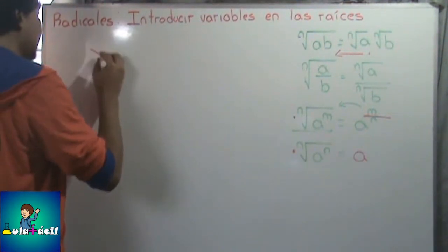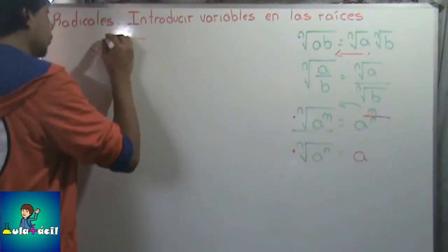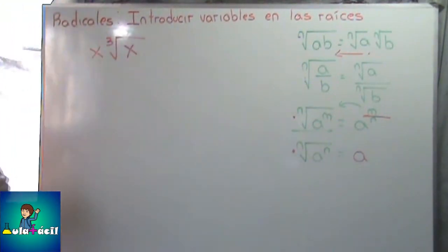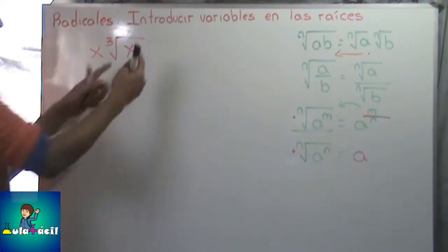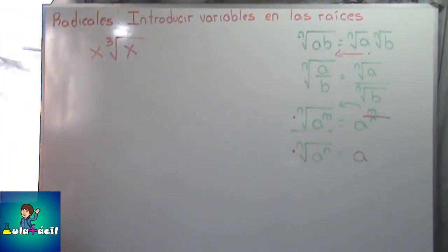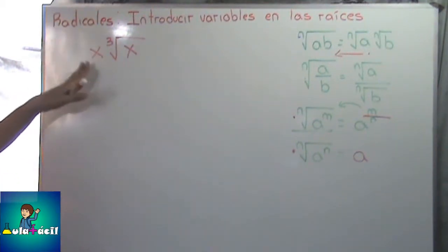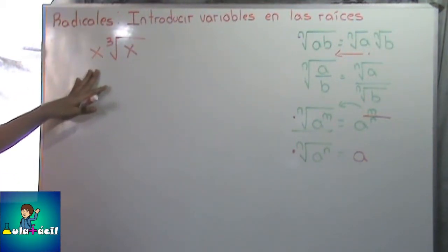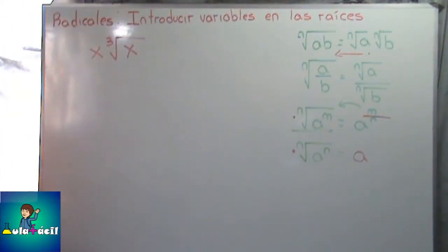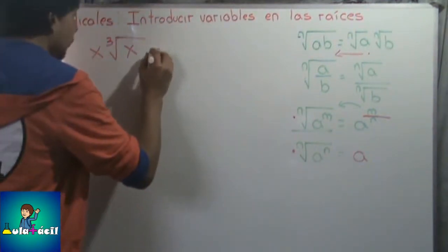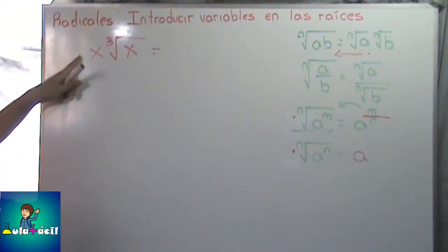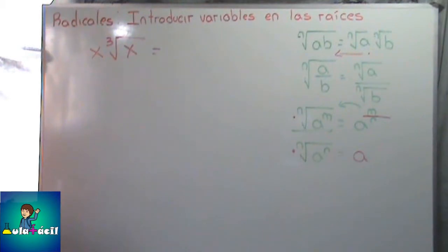Volviendo a nuestro ejercicio, teníamos X por raíz cúbica de X. Esta X va a multiplicar a este resultado. Como vimos en el video tutorial anterior, habrá ocasiones en las que convenga sacar la variable de afuera de la raíz, o bien introducirla adentro. El procedimiento es el mismo que habíamos visto con números: cuando queríamos introducir un número a la raíz, aplicábamos ciertos pasos; aunque sea número o variable, el procedimiento es el mismo.